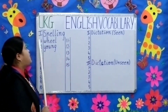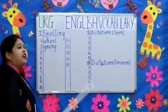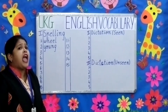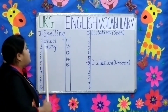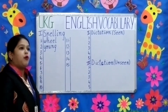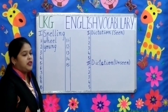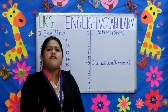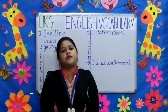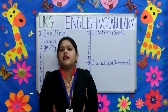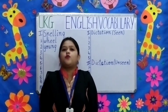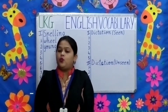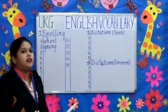The first question is spelling. Children, can you see I have written numbers from 1 to 15 on the board? That means you will be getting any 15 spellings from your spelling list. The spelling list will be uploaded on your school website.